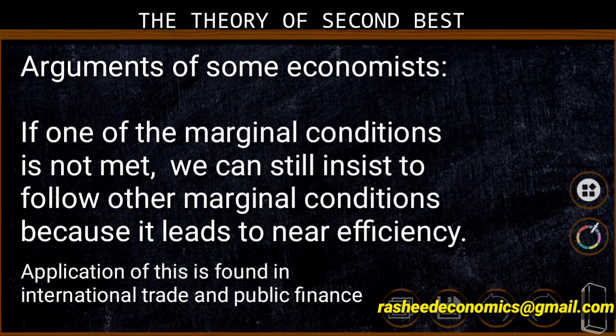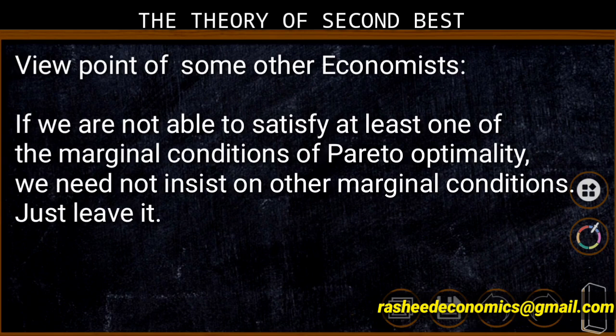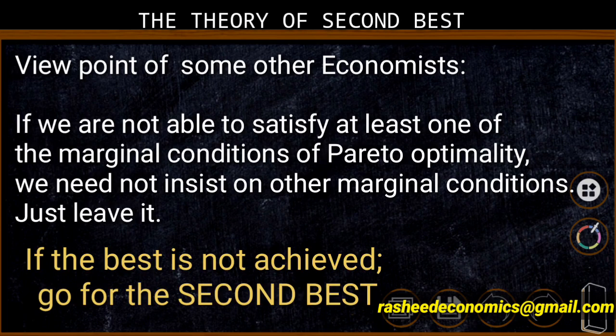But later, another viewpoint found support from various other economists. These economists argued that if we are not able to satisfy at least one of the marginal conditions of Pareto optimality, then we need not stick to the other marginal conditions — just abandon them and go for the second best solution. This approach of identifying the second best solution instead of relying on the first best solution is termed as the theory of second best.